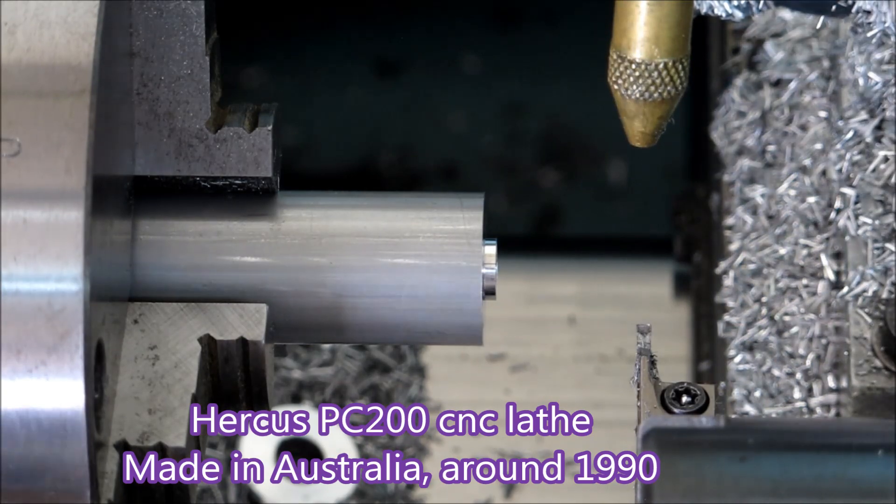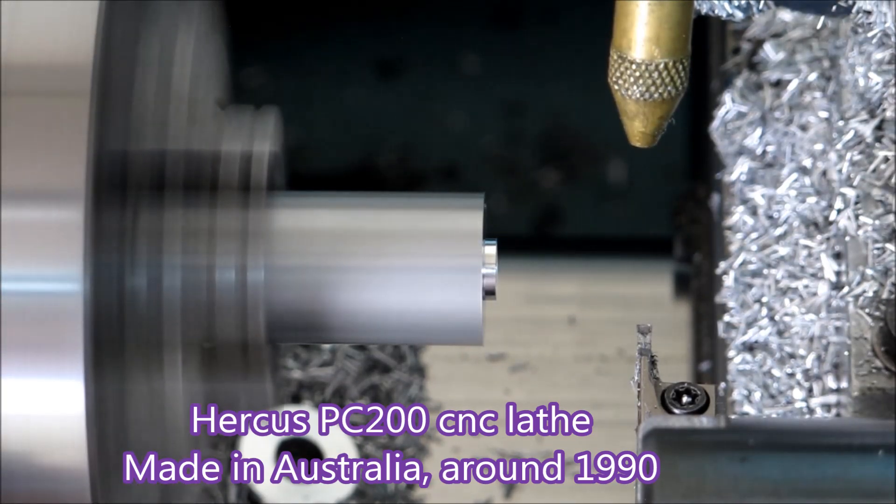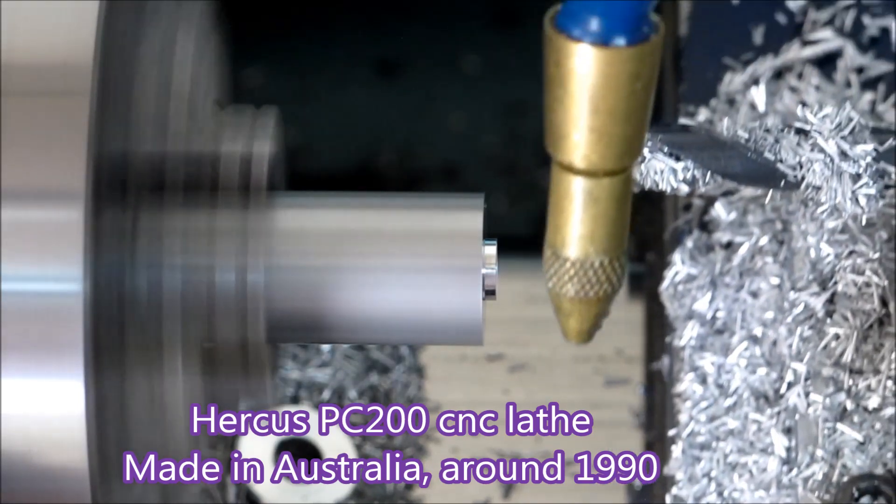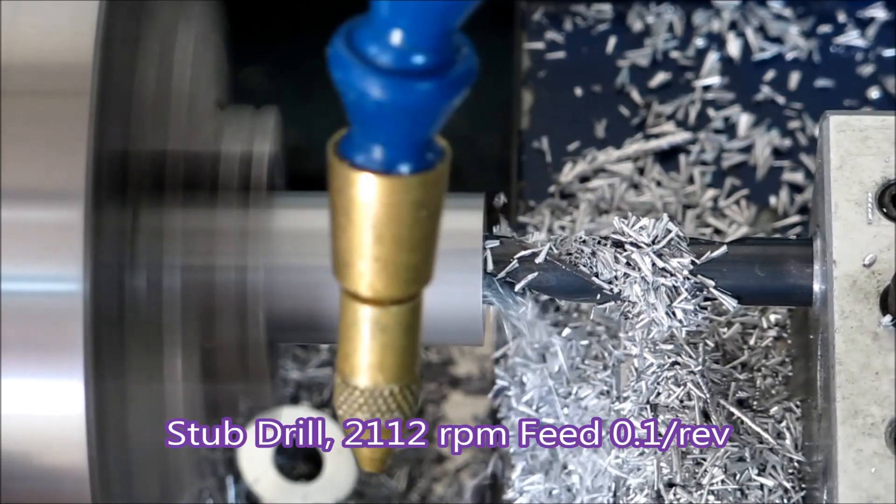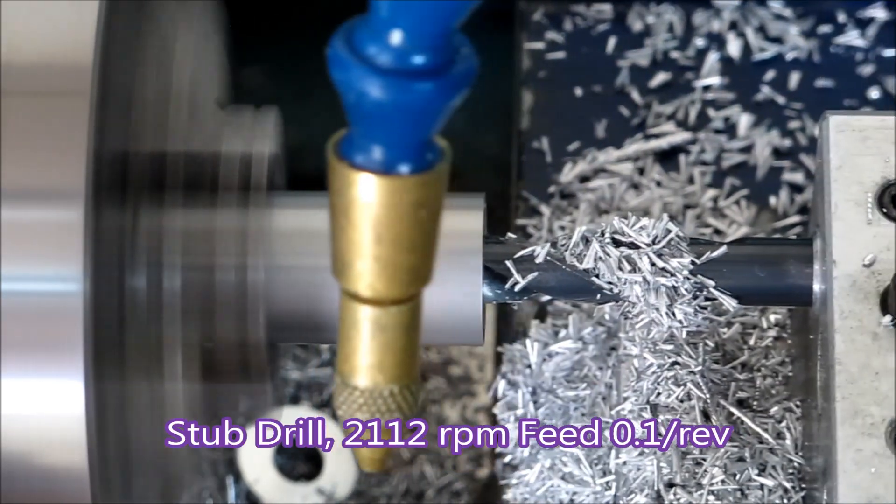This lathe is a Hercus PC 200 CNC lathe. They were made in South Australia in the 90s. Because that's DOS-based software, you can tell it was way before Windows 95.